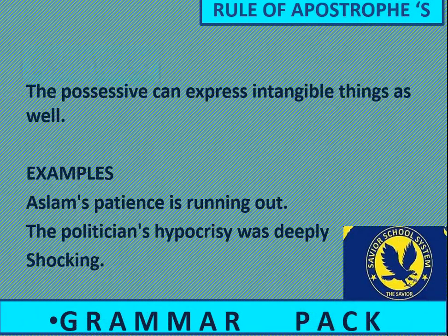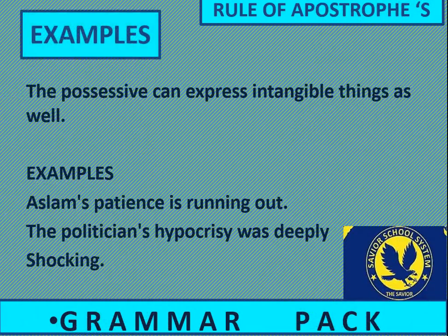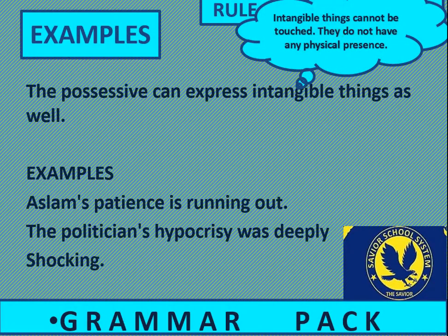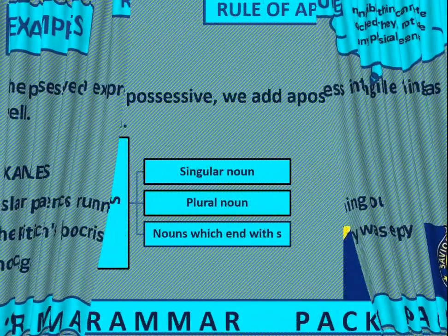The possessive can express intangible things as well. Intangible things cannot be touched; they do not have any physical presence. Example: Aslam's patience is running out — Aslam ka sabar jawaab de raha hai. Yahaan bhi 'running out' idiomatic phrase mein use hoi hai, iska matlab khatam hona hai. The politician's hypocrisy was deeply shocking — siyasatdan ki munafiqat hairaangez thi.